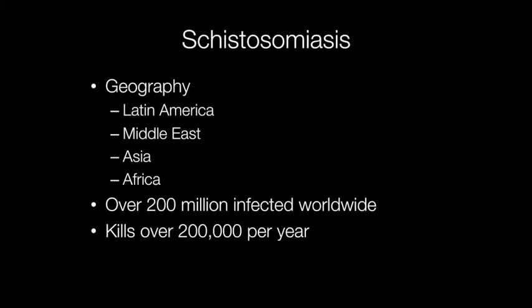Schistosomiasis is estimated to affect over 200 million people worldwide and kills over 200,000 a year. It is common in Latin America, the Middle East, particularly Egypt, Asia and Africa.